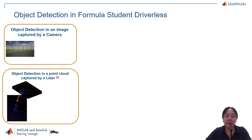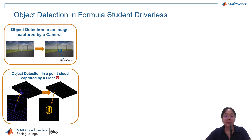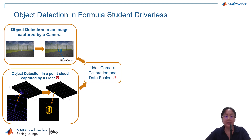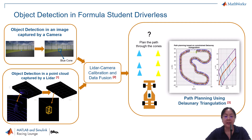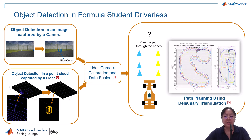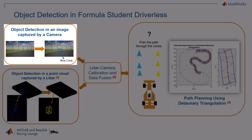Typically, a driverless car uses a camera and a lidar to capture images and point clouds of its surroundings. Images help identify cone colors, while point clouds provide accurate information of cone locations. By calibrating the camera and the lidar and fusing the data from both, the car can determine the color and position of each cone, enabling autonomous path planning. Today, we will focus on cone detection in images.